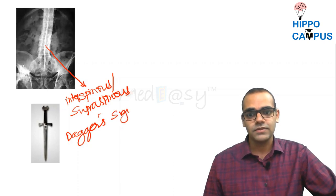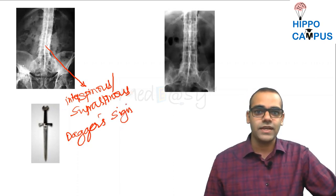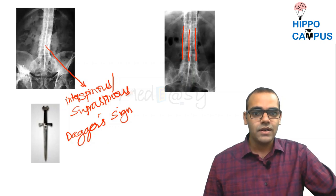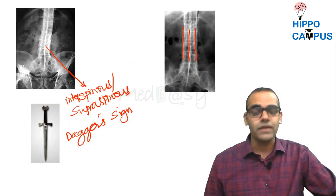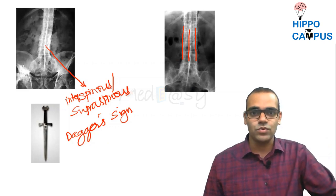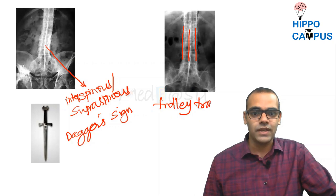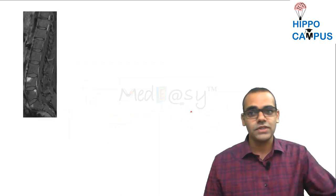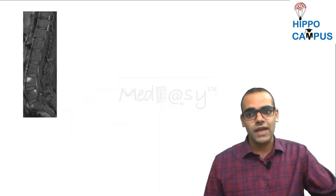Another important X-ray sign: you can see three lines — one along the paravertebral region, one along the spinal line, and another paravertebral line. These three parallel calcifications give rise to what we call the trolley track sign, which is again seen in ankylosing spondylitis.